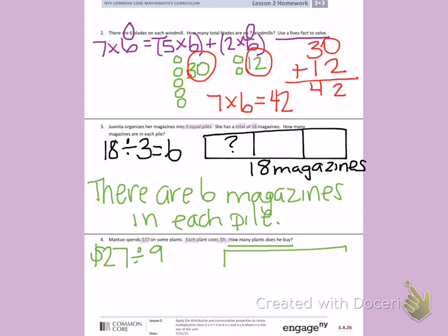I can model that in a tape diagram. Twenty-seven dollars is my total. Each plant costs nine dollars. I can skip count by nines until I get to twenty-seven, or I can guess and check. So I'm going to count by twos nine times to see if that gets me to twenty-seven: two, four, six, eight, ten, twelve, fourteen, sixteen, eighteen. That's nine times, and I'm not at twenty-seven.